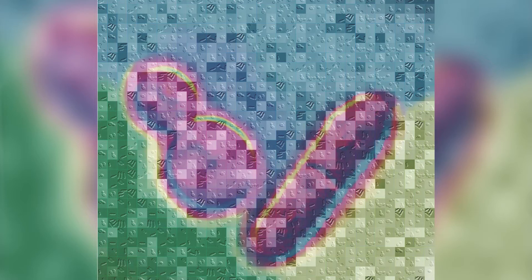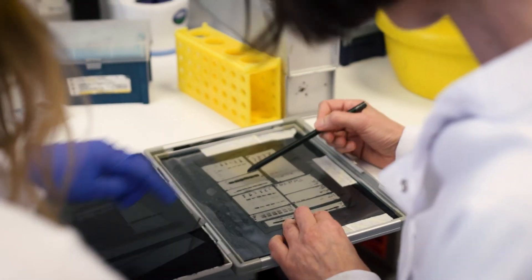We use three model organisms in the lab: two different types of yeast — budding yeast and fission yeast — which are distantly related evolutionarily. Whatever we find in those two yeasts we then translate to the mammalian system, which is human cell lines. We use a wide range of technologies, from molecular biology to cell biology, and we use mammalian cell lines as a model of cancer.